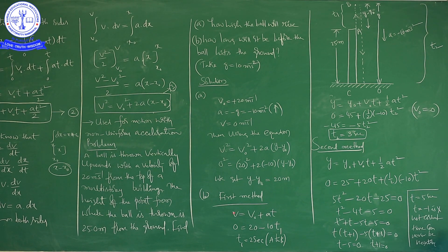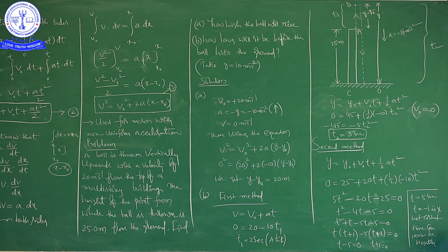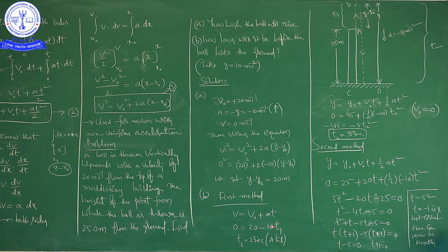For part (b), we need to find the time. Method 1: For the journey from A to B, using the first equation of motion v = v₀ + at. Here v₀ = 20 m/s, v = 0, and a = −10 m/s². Substituting: 0 = 20 − 10·t1, so t1 = 2 seconds. The body takes 2 seconds to move from A to B.